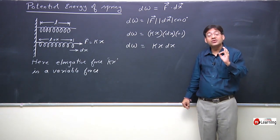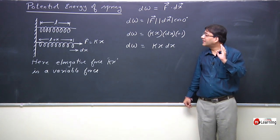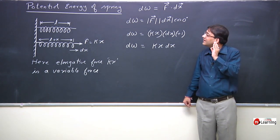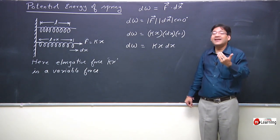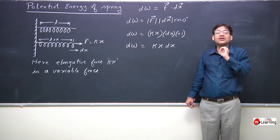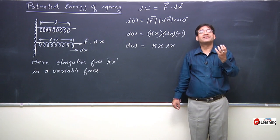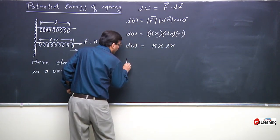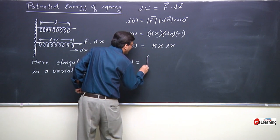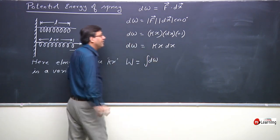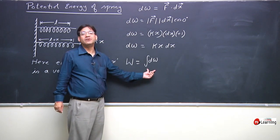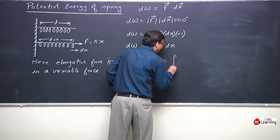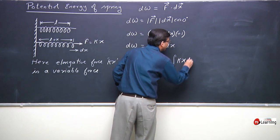I wish to calculate the total work done in order to elongate the spring from its natural length to elongation x. Work is a scalar quantity and should be scalarly added. We had determined differential work — in order to calculate the total work we need to integrate: W = integral of dW = integral of kx dx. Since k is a constant, it comes outside the integral sign, leaving k times integral of x dx.